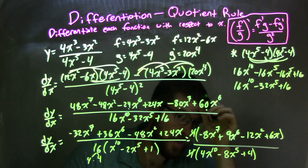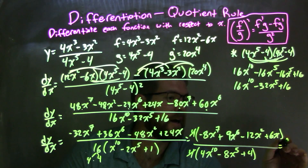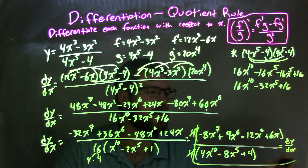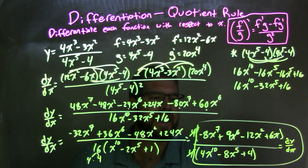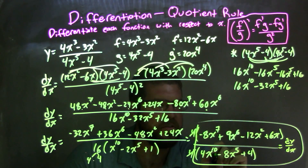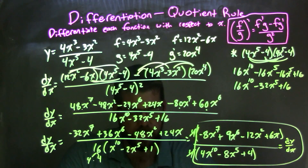That leaves my final answer, my final derivative, dy/dx: negative 8x to the seventh plus 9x to the sixth minus 12x squared plus 6x, all over 4x to the tenth minus 8x to the fifth plus 4.